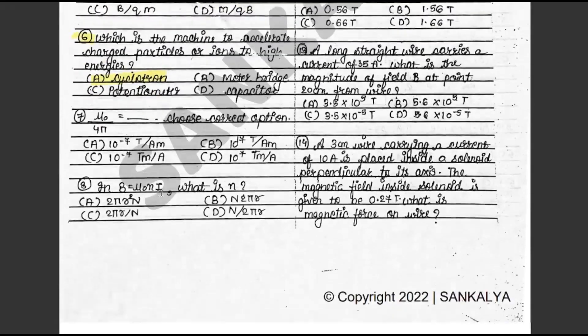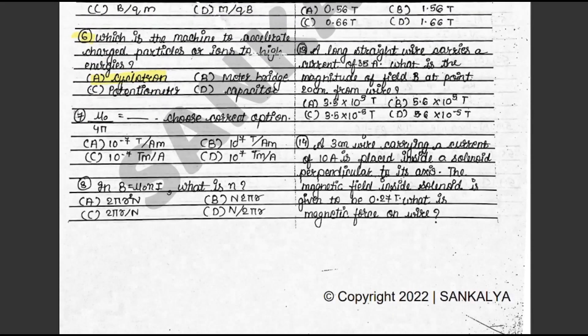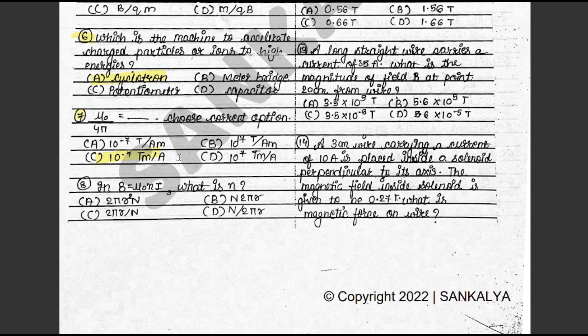Question 7: Mu₀ upon 4π is equal to dash. The answer is C: 10 raised to minus 7 Tesla meter upon ampere. This is on page 143.